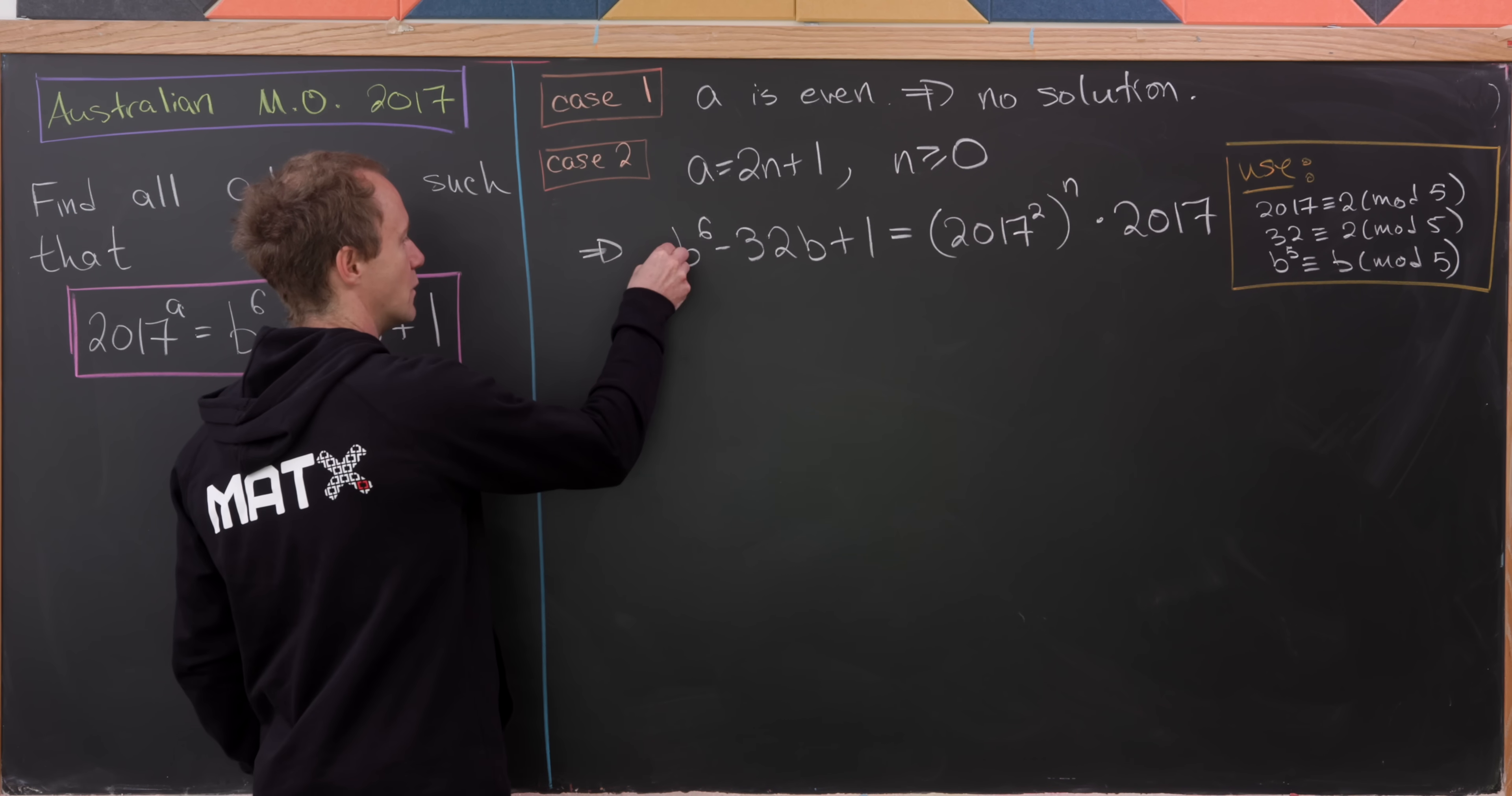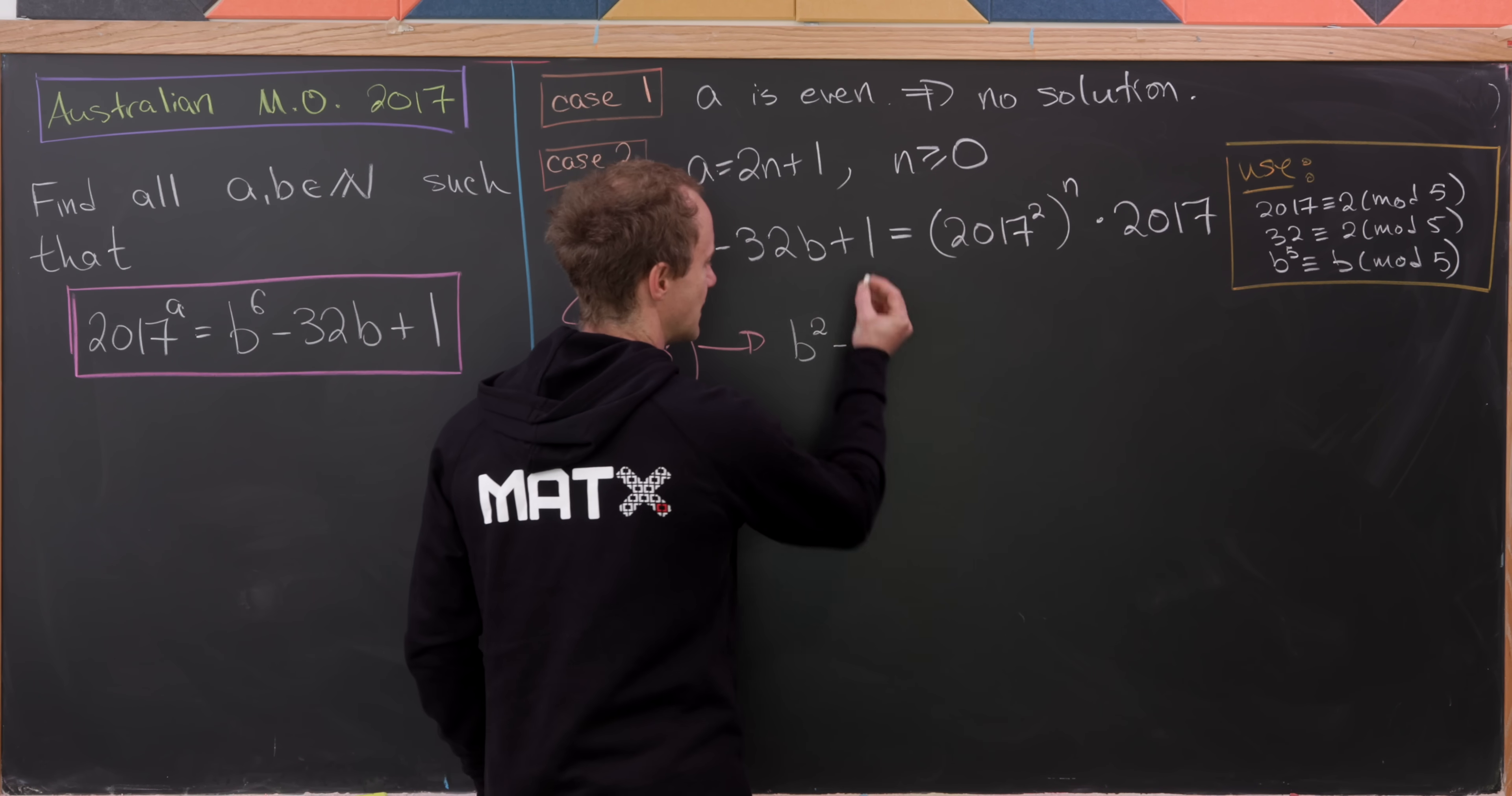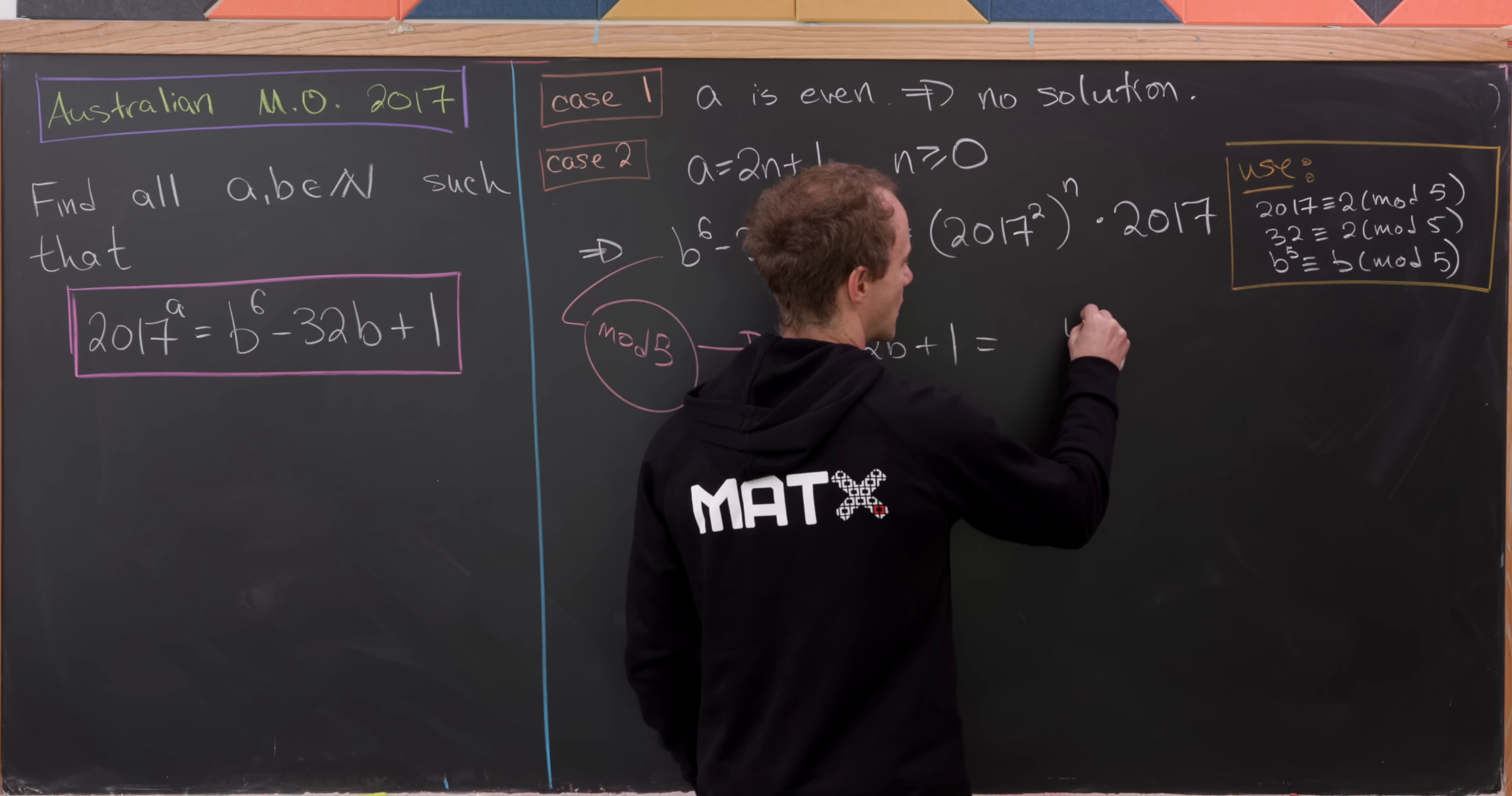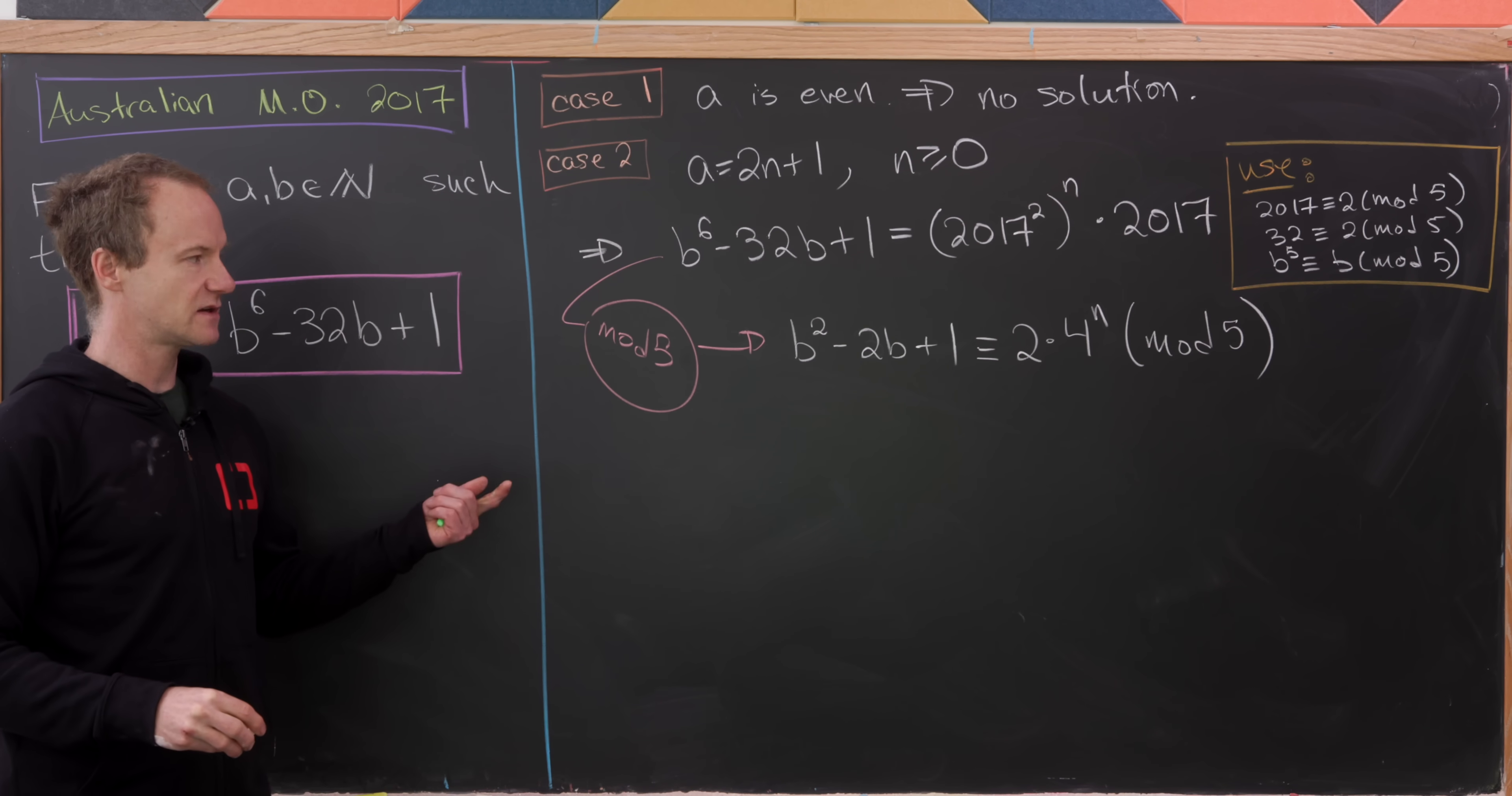So that means what we'll do here is take this entire equation and reduce it mod 5 and see what we get. So this B^6 will turn into a B^2. This minus 32B will be minus 2B. And then we'll have that's going to be equal to 2^2, in other words, 4 to the n power times 2. But that's not equality. That's congruence modulo 5.